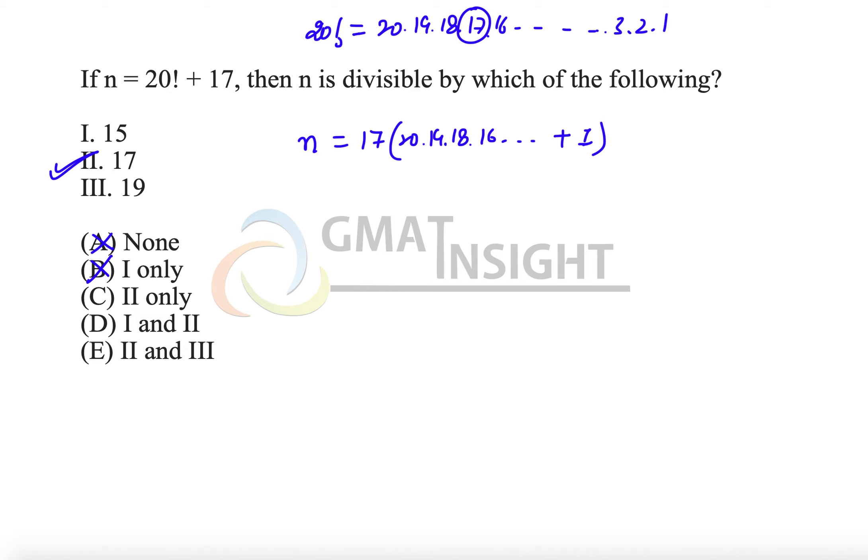Now understand one more thing. This particular part is a multiple of 15 as well as a multiple of 19, because we have 19 as a factor here and we have 15 as a factor right after 16.